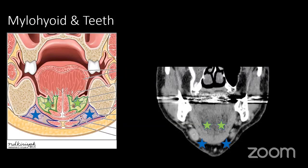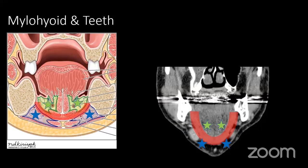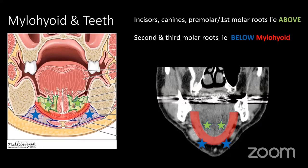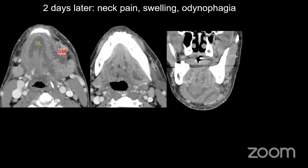There is an important relationship between the location of the dental pathology and the location of the collection. In the floor of the mouth you have the sublingual space and the submandibular space, demarcated by the mylohyoid muscle — the 'sling' of the floor of the mouth. Incisors, canines, premolars, and first molar roots lie above the muscle, giving sublingual collections; infections from the second or third molar, whose roots lie below the mylohyoid, most probably give submandibular fluid collections.